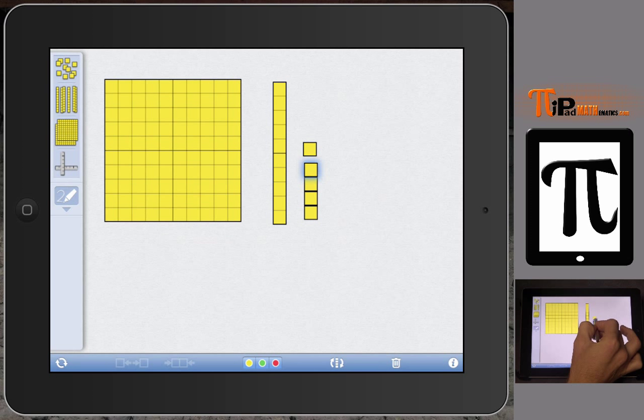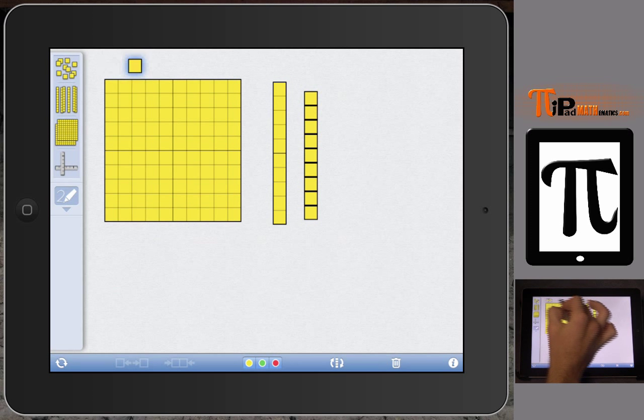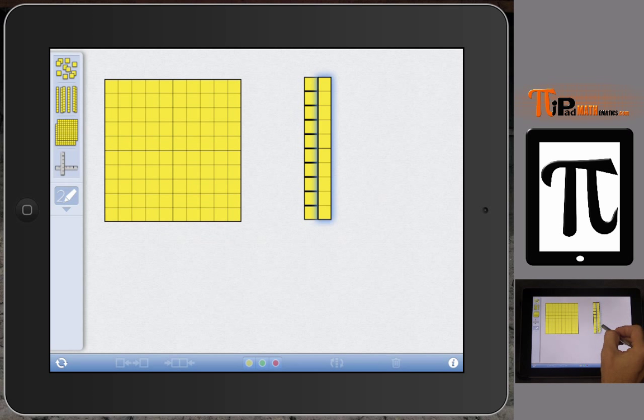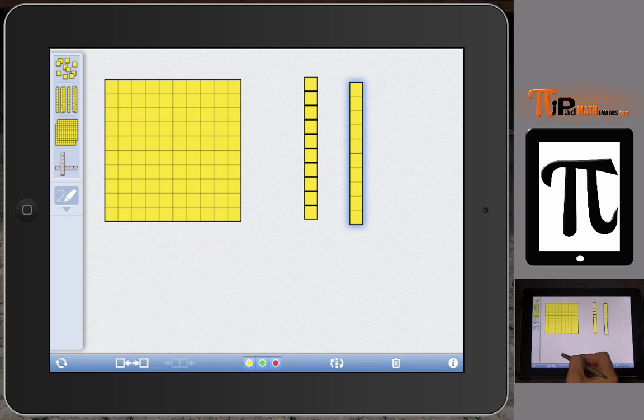When we stack 10 on top, we actually notice that it is the same length as one of our longs. So it is in proportion, it is proportionate to 10 of these ones. And this app allows you to break that 10 apart into the 10 ones or lump it together.